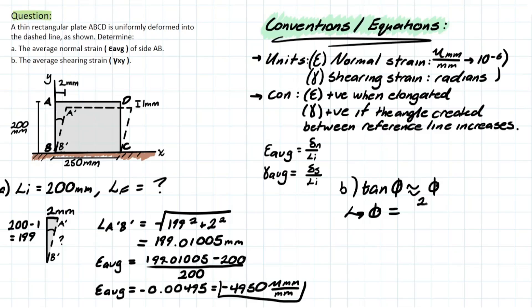So now that that is out of the way we can then take the opposite over the adjacent which will be 2 over the adjacent which is our L initial which is 200 mil. Solving for that we have 0.010 radians and this theta is equivalent to what we were solving for which is the average shearing strain x y.